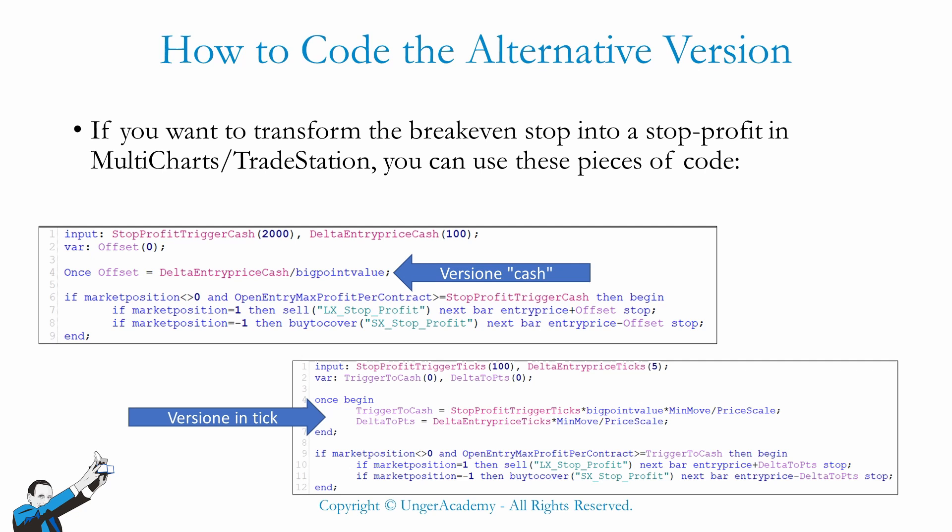Let's see how they work in more detail. The first version, working with cash, allows us to specify first the monetary amount that activates the breakeven stop between brackets, and then the offset - the difference between the breakeven stop and the entry price. This offset is calculated on line 4 and corresponds to the amount that will be either added to the entry price in the case of long positions, or subtracted from the entry price in case of short positions. On lines 7 and 8 we have the instructions to send the long and short orders respectively. The second version is the same process but uses ticks instead of monetary amounts.